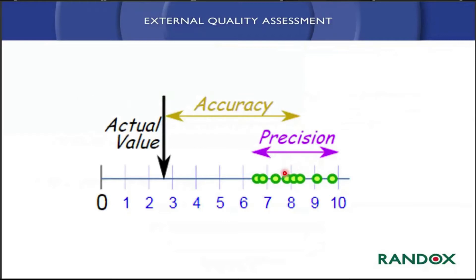When we look at precision, if you measure the same sample time and time again, you'll have a normal spread of results due to random errors. Accuracy — how far you are away from the correct value — isn't known by just looking at your precision. We have to look at that outside of our internal QC, which is why we're running our external quality assessment. There's also a degree of where we look at peer group systems, which we'll be discussing — how peer group systems can be useful in determining accuracy aspects.